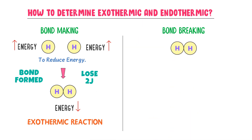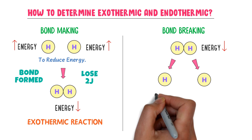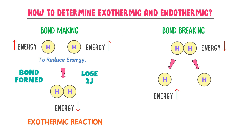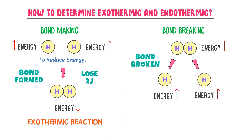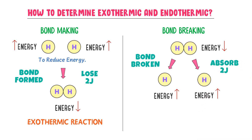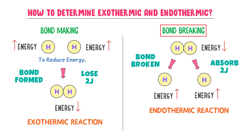Secondly, consider a hydrogen molecule, which has lesser energy because it is the combined form of two atoms. Now consider splitting this hydrogen molecule into two hydrogen atoms — each isolated atom has more energy. The bond is broken between the two atoms. Where does the extra energy come from? The extra energy comes from the surrounding. The hydrogen molecule absorbs two joules of energy and then the bond breaks, giving two hydrogen atoms. The energy is absorbed from the surrounding, so this is an endothermic chemical reaction. Remember, whenever bond breaking occurs, it will always be an endothermic reaction.